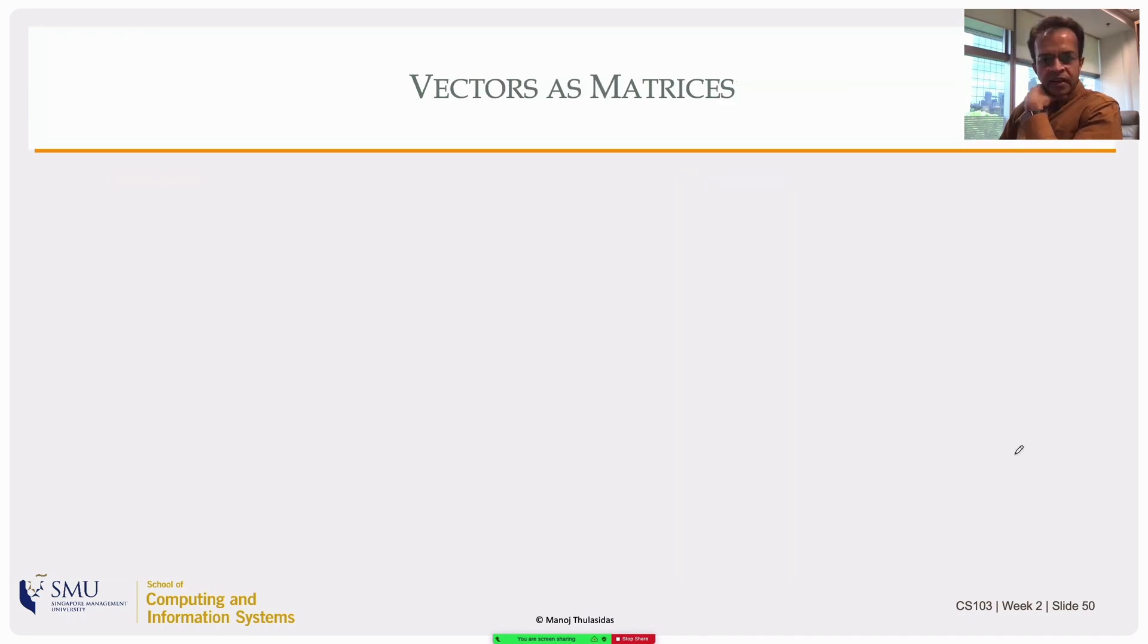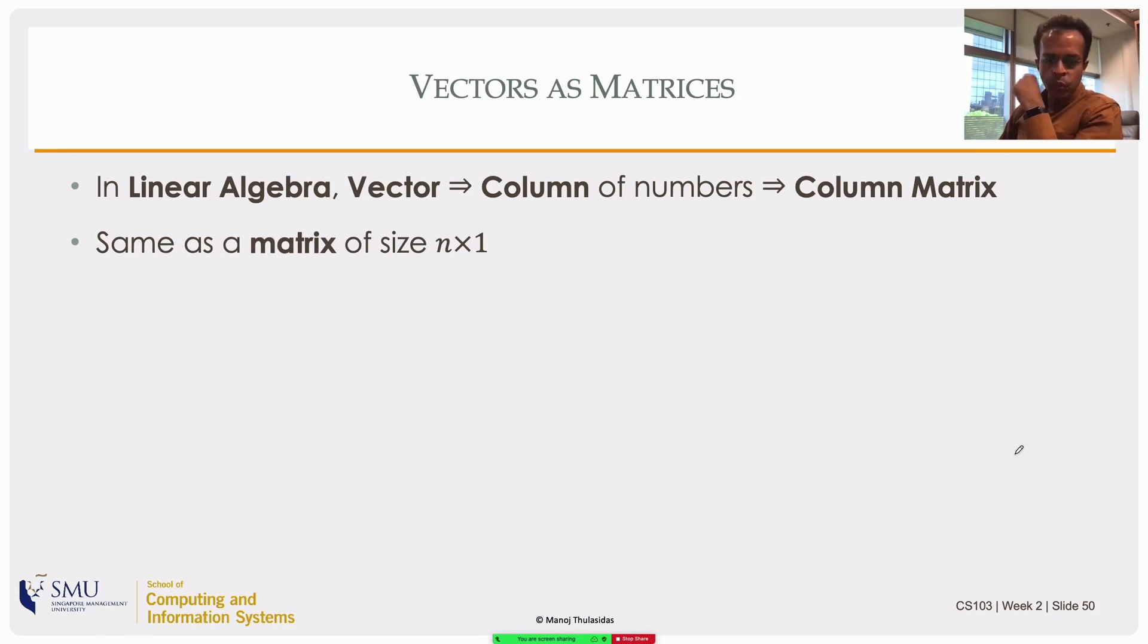Now that we have defined matrices, we can see that vectors are actually just matrices of one column. It's the same as a size n by 1, but we'll drop the 1.